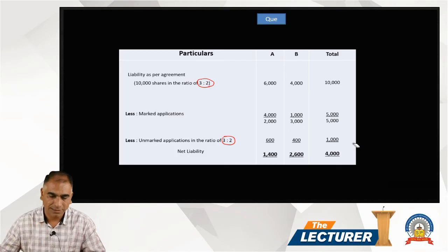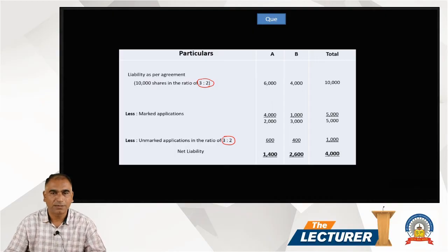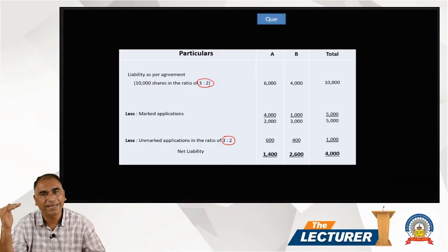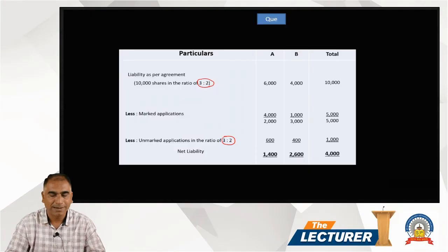Determination of liabilities. So how we determine, how we calculate it: gross liability minus marked application equals individual liability, and you will have net liability. Clear?